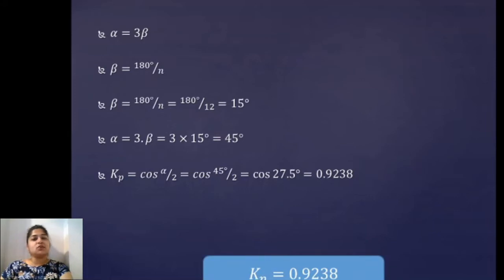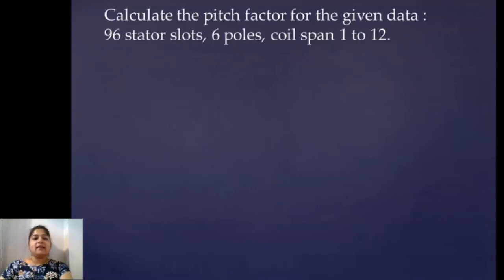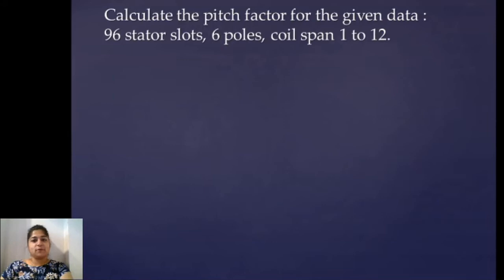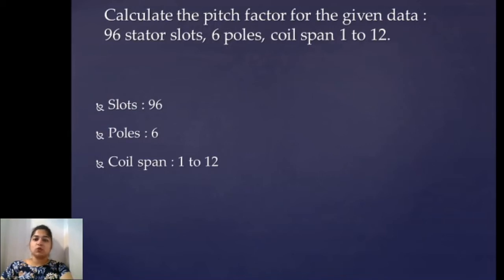To make our understanding better we will take one more similar problem. Calculate the pitch factor for the given data: 96 stator slots, 6 poles, and coil span is 1 to 12. Let's write down the given data — 96 slots, 6 poles, and coil span 1 to 12. To again understand whether the given coil is full pitch or not, or if it is shorted and by how many slots, let's find N.